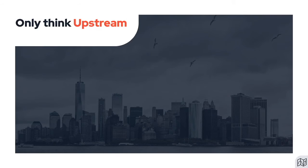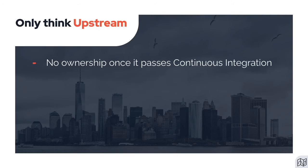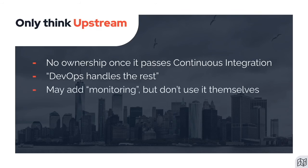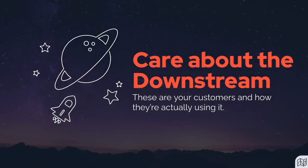The fifth and final mistake is that most people on cross-functional teams only think upstream. There's little to no ownership once the build passes continuous integration, or CI. Since DevOps handles the rest, the attitude is 'I don't need to do anything else' — maybe add some monitoring, but no one on the team actually uses it themselves. Their definition of done is seeing a green pipeline. Instead, care about the downstream. It's not true DevOps if devs and testers aren't part of the downstream. If you're unsure what I mean, search terms like observability, operability, and site reliability engineering. There is a lot more that happens downstream than many people realize, and actually more testing and automation happens downstream than upstream. Just think about that for a second.